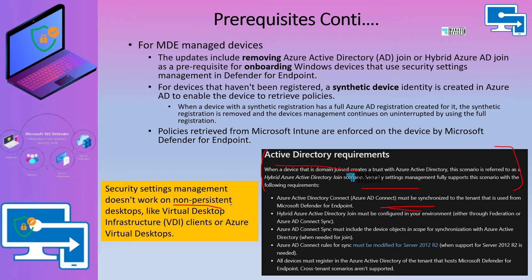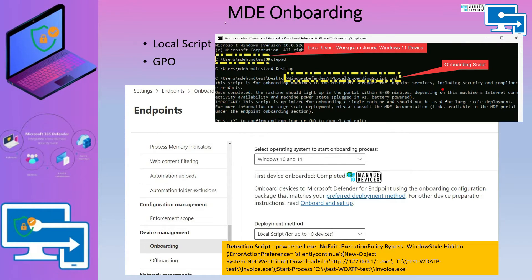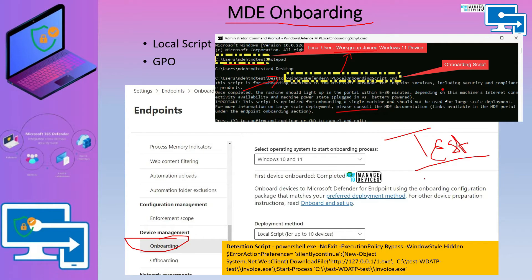This is only for non-persistent AVDs. For those types of devices, if you want to manage them, you have to use another onboarding method such as Intune or Configuration Manager. Just to give a high-level overview — this is the machine where I have logged in with a local username. This is a workgroup joined Windows 11 device. I ran this script to onboard this device to MDE. I got this script from the MDE portal onboarding tab. You can download the script and use it for test scenarios, but if you want to deploy this onboarding process in production for thousands of devices, you need to look for GPO or some other mechanisms. There is also a detection script after the onboarding process to check whether onboarding worked or not.